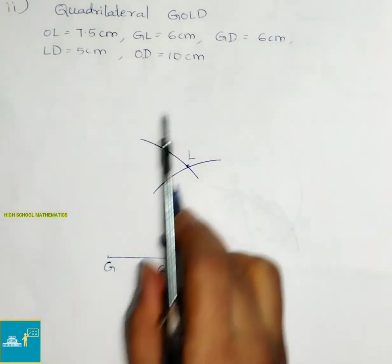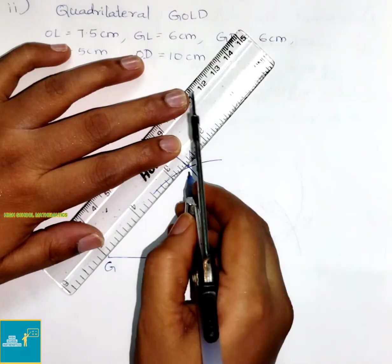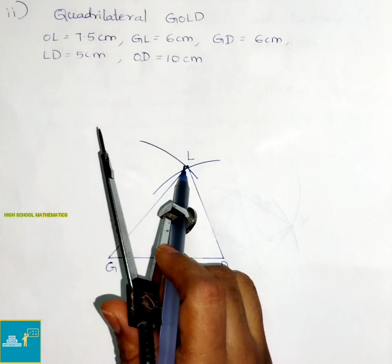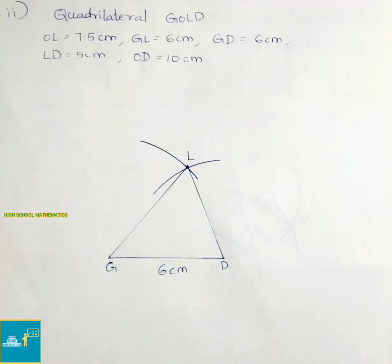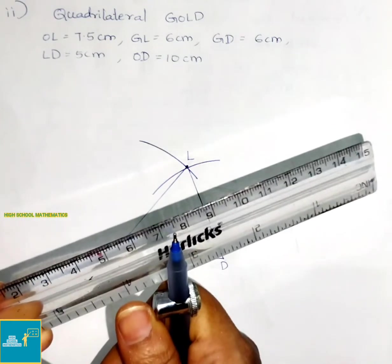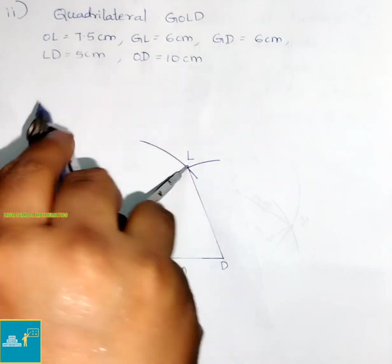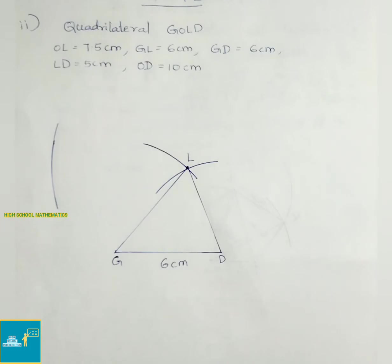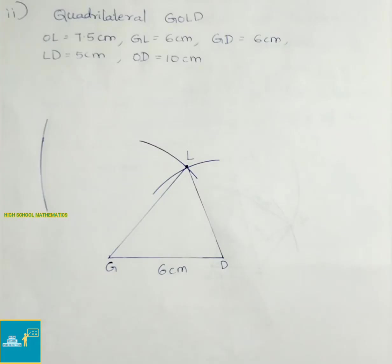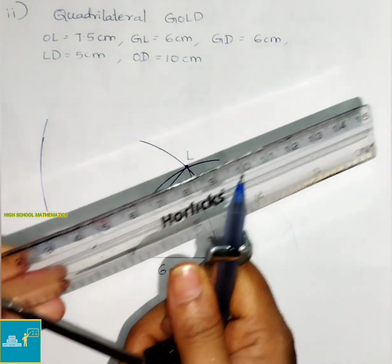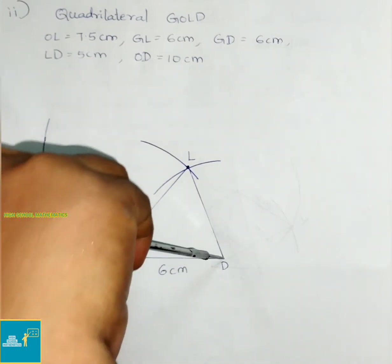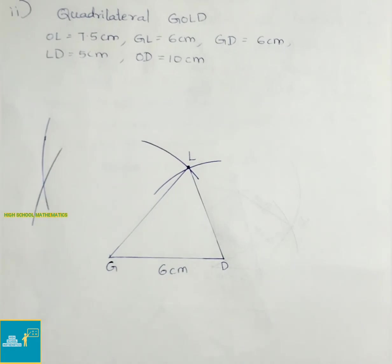Join GL and LD. Now with L as center, draw an arc of radius 7.5 cm. Take 7.5 cm, then with L as center, draw the arc that cuts at point O.